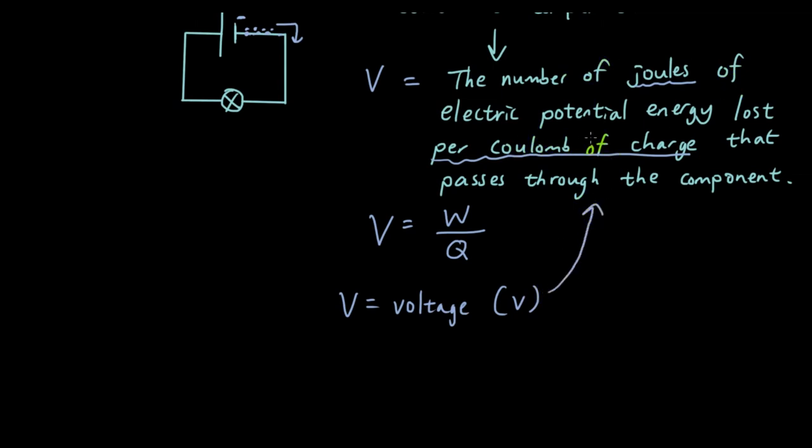The number of joules of electric potential energy lost per coulomb of charge. Q is the quantity of charge, which is measured in coulombs. And W stands for work, which is the energy required to do the work, measured in joules.